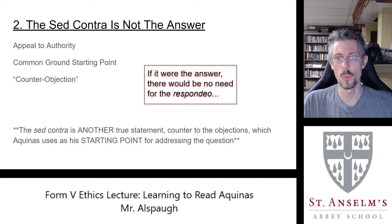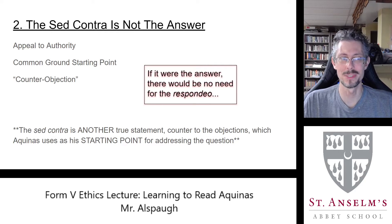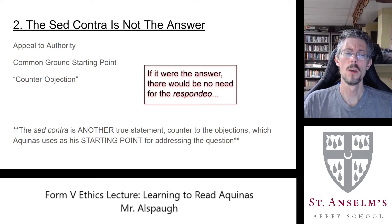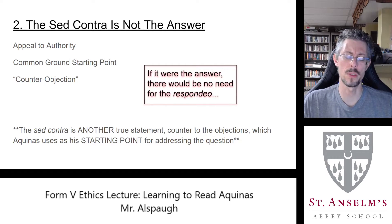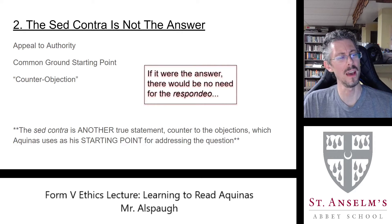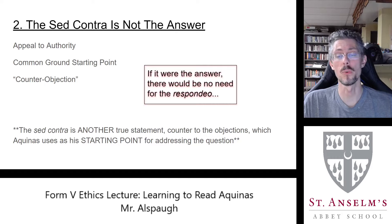The Summa is a bit formulaic — it's a textbook for beginners after all, not always a conversation between masters on great disputed questions. But it is important to see the ideal of the sed contra as this common-ground starting point. You can also see it as a counter-objection: occasionally Aquinas will add a reply to the sed contra at the end of the replies, treating it as an objection and noting it wasn't exactly right either — which is a pretty interesting thing when you do see it.